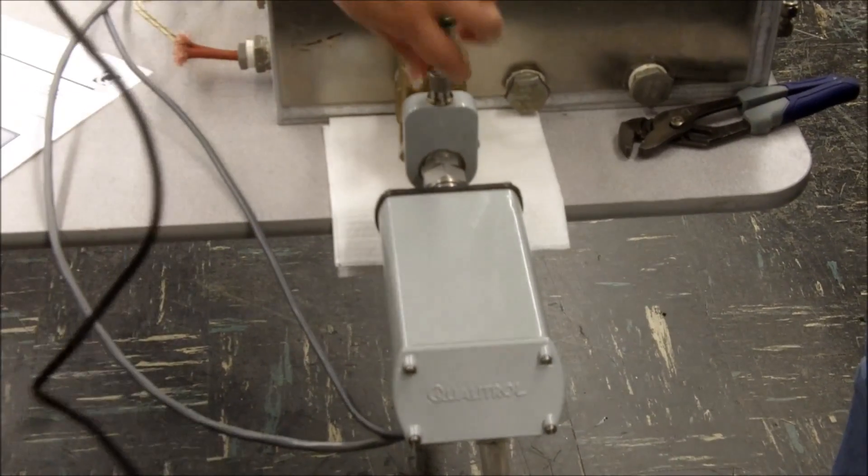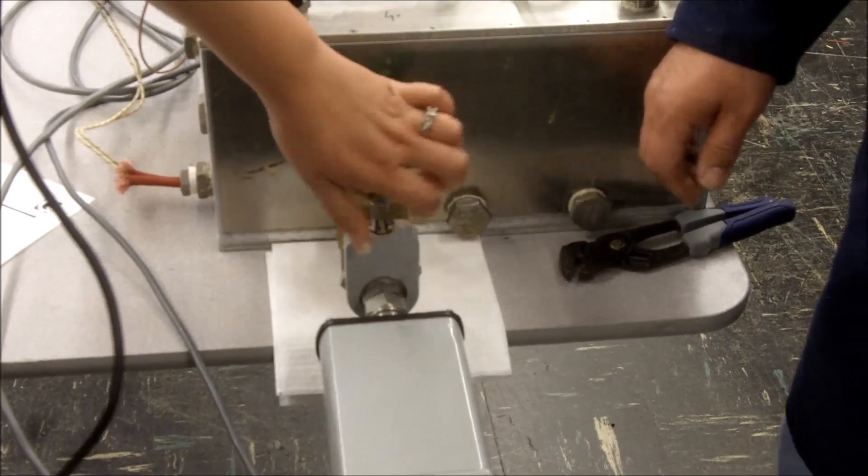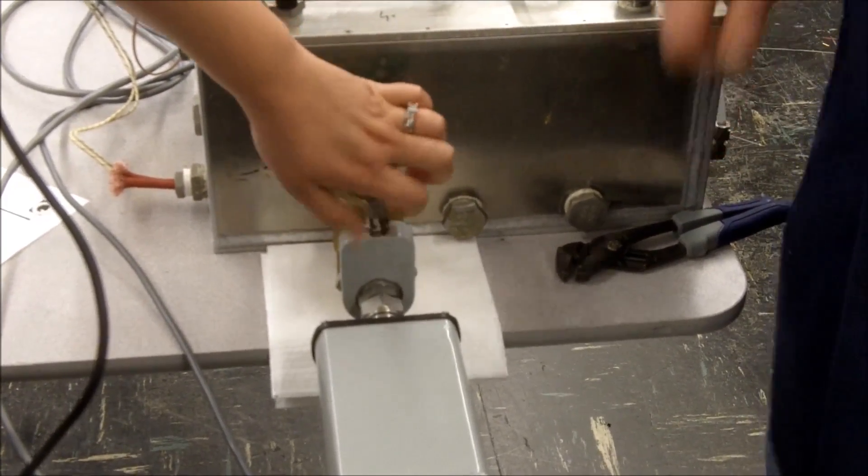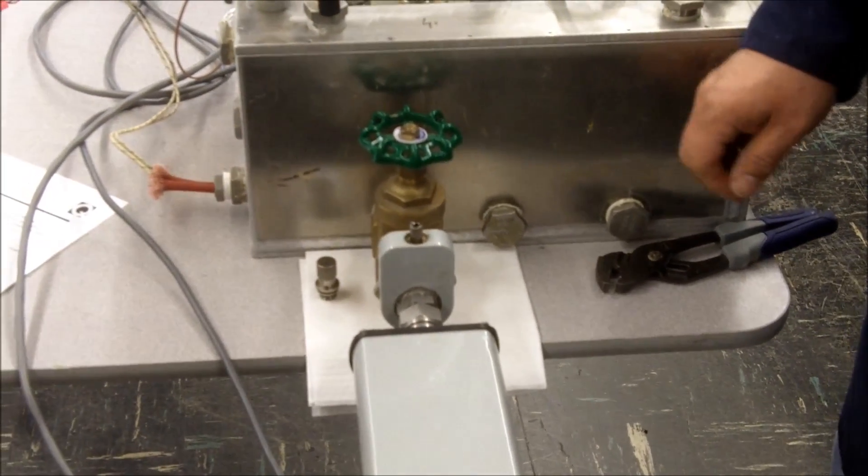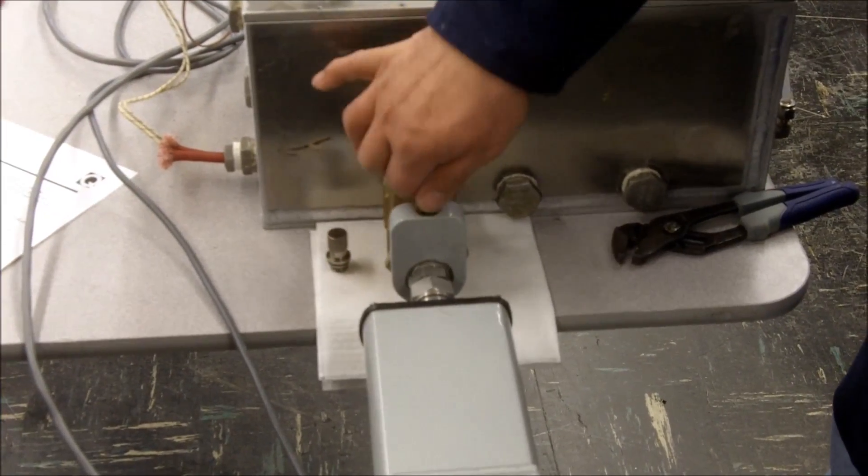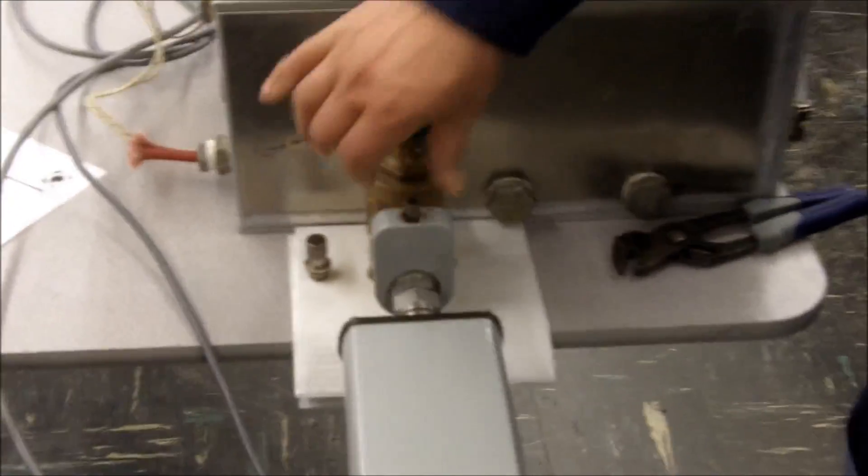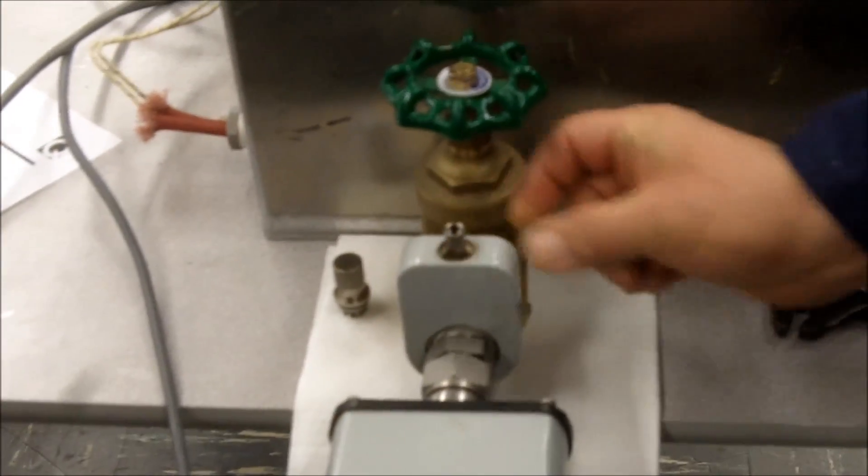So the first step would be to open your sampling port here, your sampling valve for the DGA 150. You want to turn the sampling valve in order to let oil flow freely to remove any debris or water that may have collected to make sure that you have that bulk uniform sample.